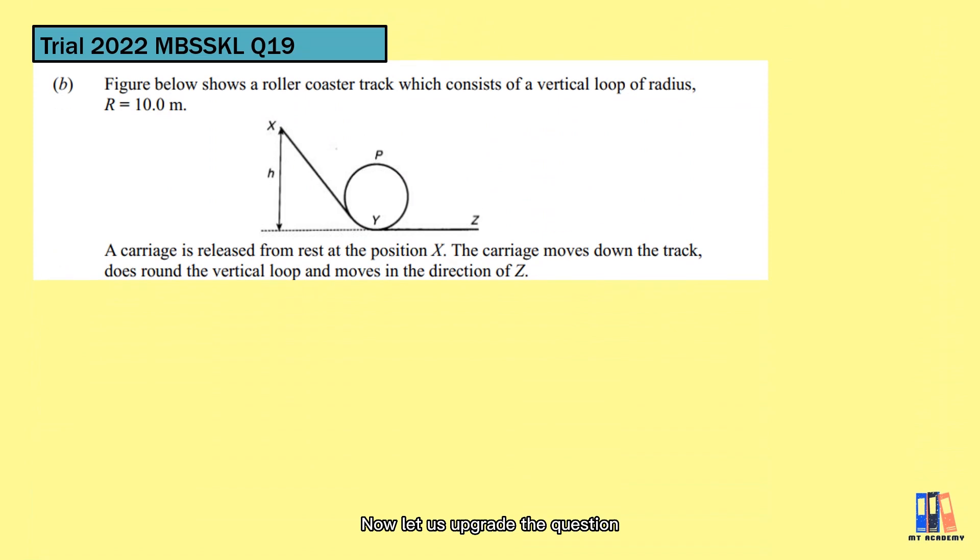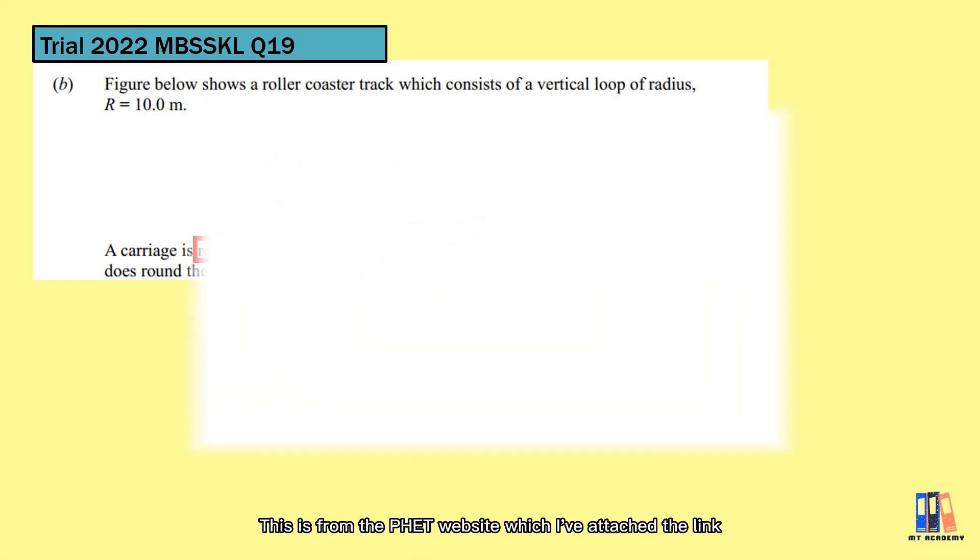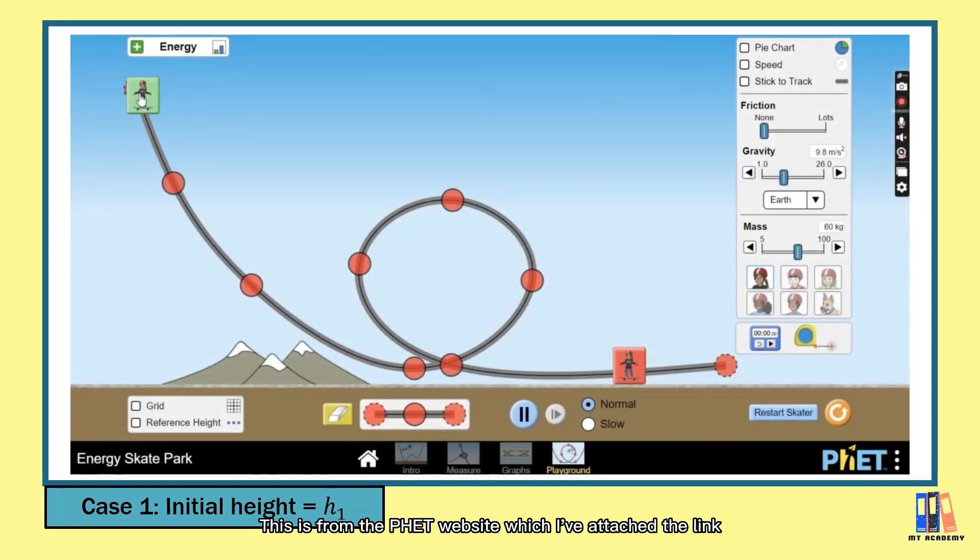Now, let us upgrade the question from SMK Methodist KL in 2022. A carriage is released from rest at position X and moves down the track to complete a vertical loop. Before we discuss further, let us see one related simulation here. This is from the PhET website, which I have attached the link below if you are interested to try. By the way, I have tried my best to draw the track as close as the circular path, but this would be good enough to demonstrate the case.